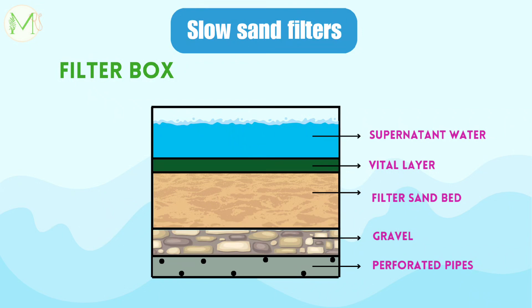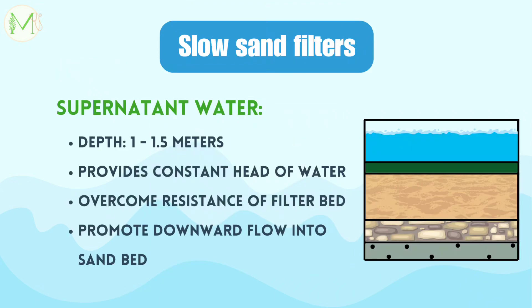This is how a filter box looks. It is a schematic diagram for better understanding and represents the actual sequence of the elements of slow sand filters. The supernatant water is the top layer of water that needs to be purified. The depth of this water layer is about 1 to 1.5 meters above the sand bed. There is sufficient quantity of water present here to promote downward water flow into the sand bed. Due to the constant head of water, water is easily allowed to flow into the sand bed by overcoming the resistance of the filter bed. At this zone, purification by sedimentation, oxidation and particle agglomeration occurs.